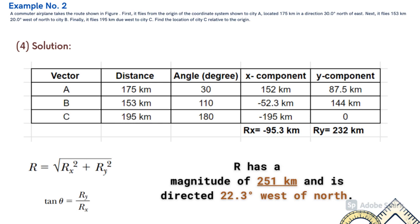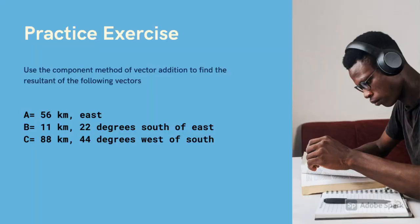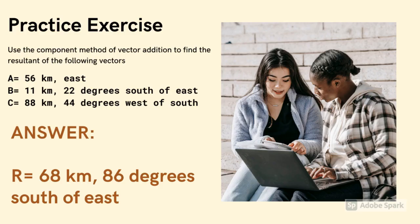251 kilometers directed 22.3 degrees west of north. Now get your physics notebook and try answering this problem. Did you get the same answer? Resultant vector is equal to 68 kilometers and 86 degrees south of east.